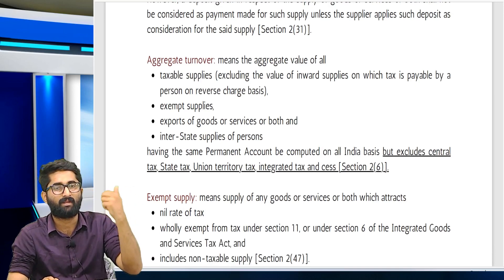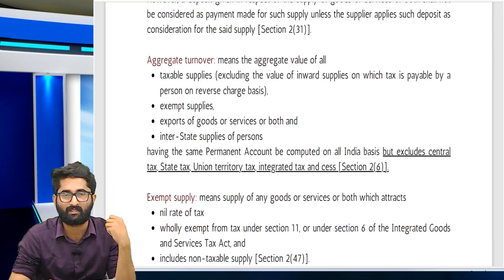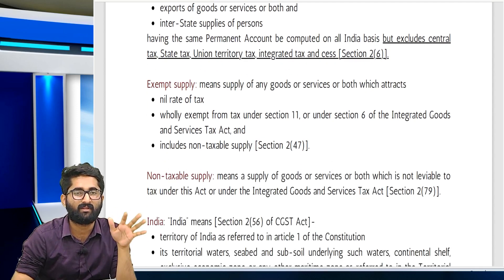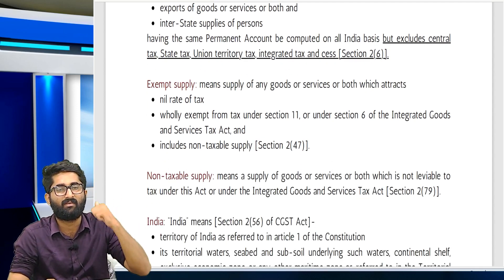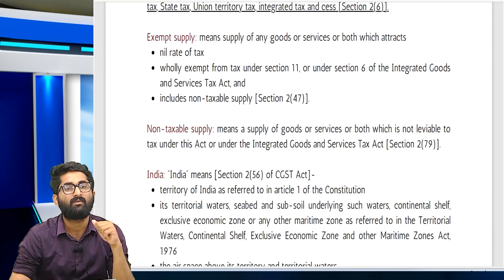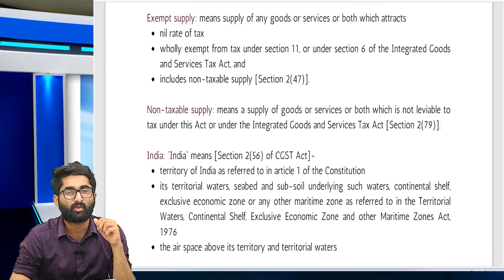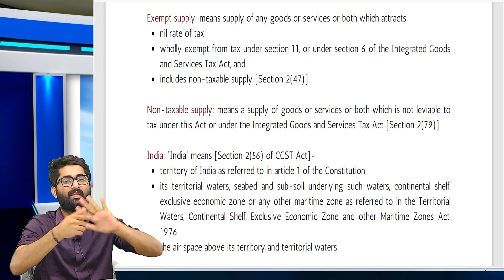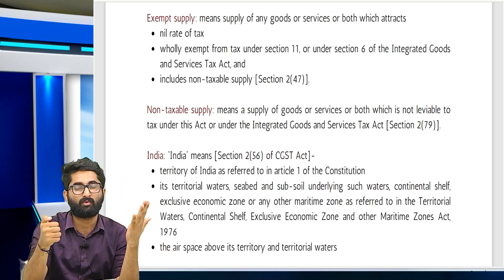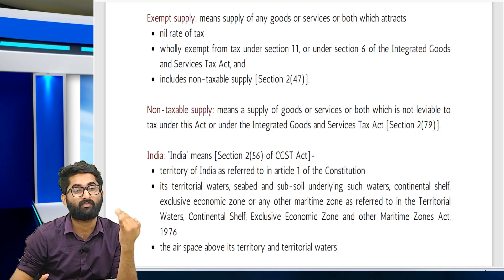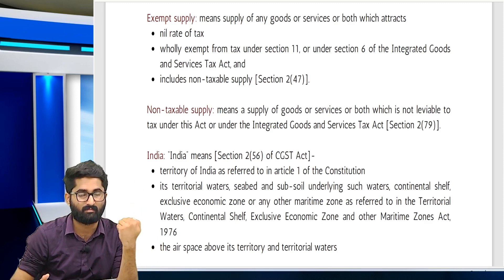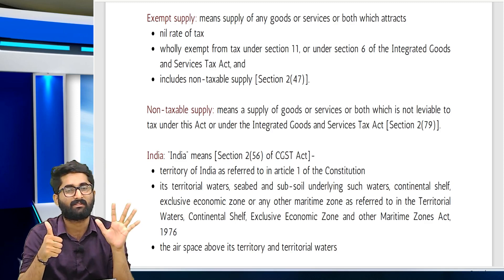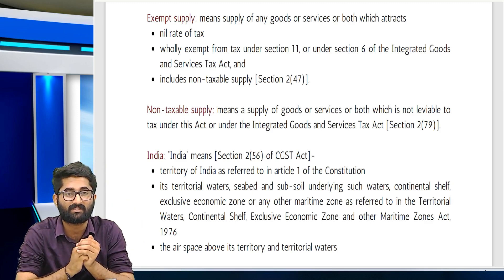Aggregate turnover includes: taxable supplies, interstate supply, exempt supplies, export supplies. Exempt supplies includes nil rated and non-taxable supply also. Non-taxable supplies are those not taxable under section 9 subsection 2 — that is alcoholic liquor for human consumption and the five petroleum products: petroleum crude, motor spirit, high speed diesel, aviation turbine fuel, and natural gas. These six items have no GST.